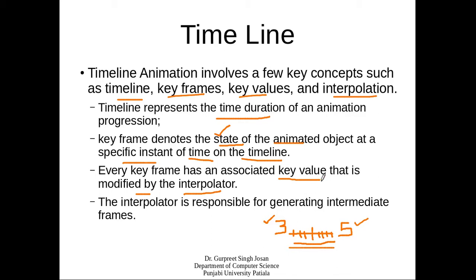Every key frame along the timeline is associated with some key values. Key values denote the values of the object in that particular key frame. For example, if a key frame has a circle as an object, the key value may correspond to the color of the circle — the property is color and the value is red. The interpolator is responsible for generating the intermediate frames using those key values.